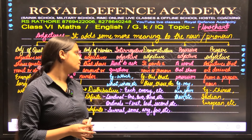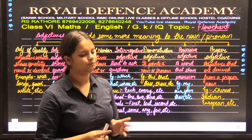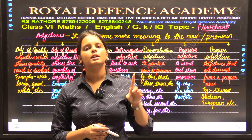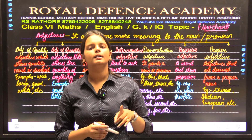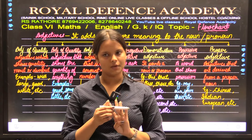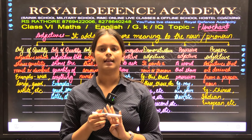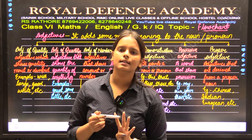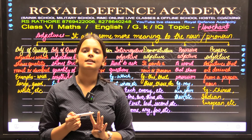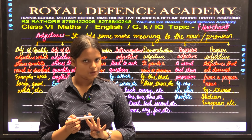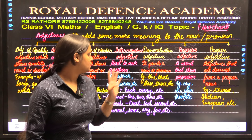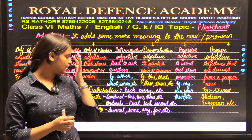Demonstrative adjectives point to a noun or pronoun. When we are demonstrating or pointing a noun and pronoun, it is a demonstrative adjective. There are basically four types: this, that, those and these. This and that are used for singular; these and those are used for plural. This and these are used for near objects; that and those are used for far objects.